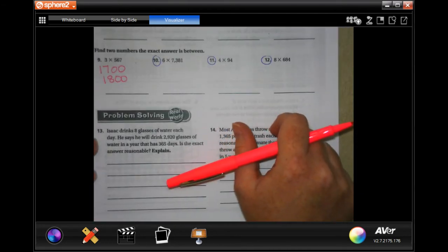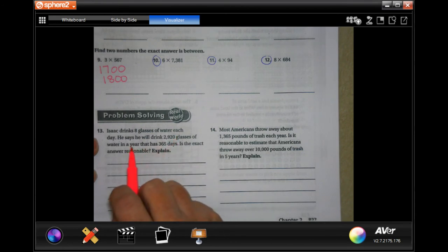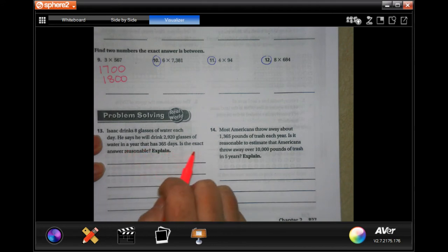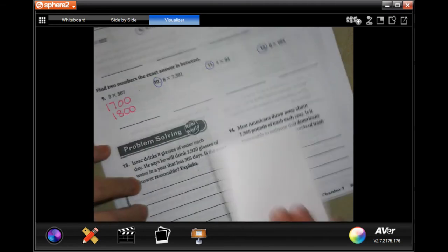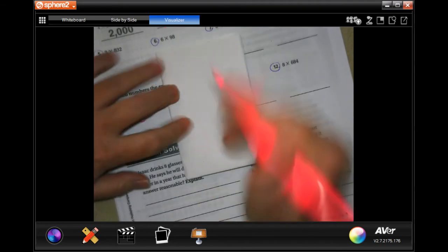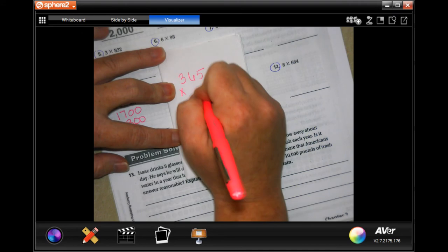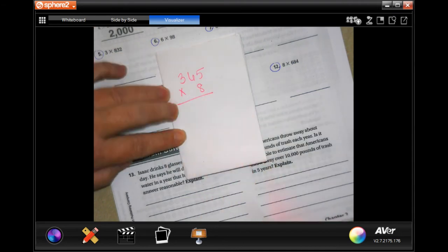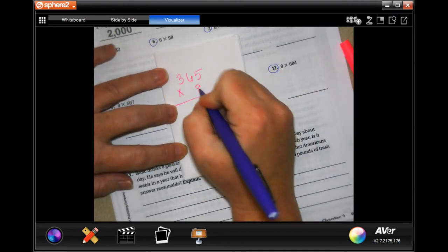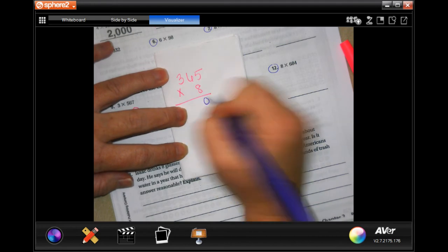We're going to go to 13. Isaac drinks eight glasses of water each day. He says he will drink 2,920 glasses of water in a year that has 365 days. Is the exact answer reasonable? So again, I'm going to go over to another piece of paper, and I'm going to do 365 times the eight glasses he drinks each day. So five times eight is 40, carry your four.